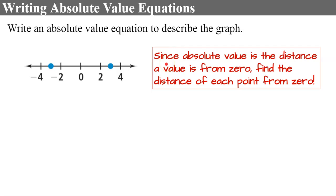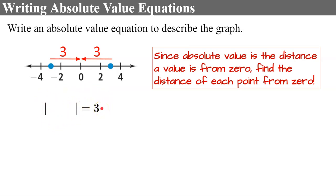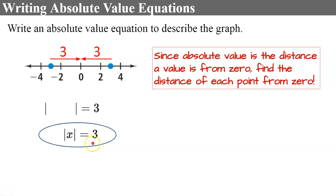Since absolute value is defined as the distance a value is from 0, we're going to find the distance of each point from 0. The midpoint is 3 from 0, and also 3 from 0. So we know the absolute value of something equals 3. Because these solutions are opposites, that something is just the variable x. So the absolute value of x equals 3, giving solutions x = 3 and x = -3. The absolute value equation representing this graph is |x| = 3.